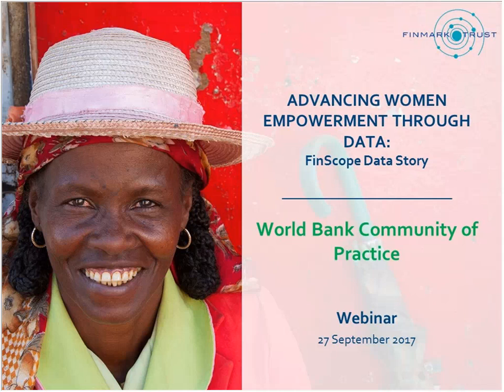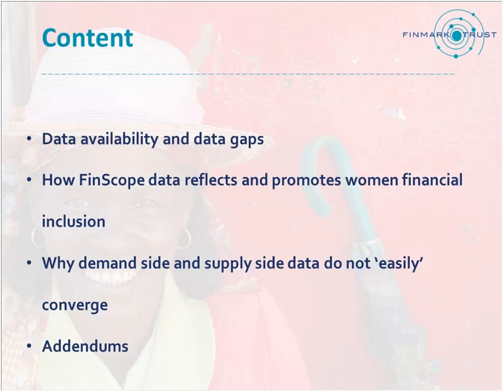Abel Motsomi: My name is Abel Motsomi. I am a research and information specialist at Finmark Trust. We collect data from FinScope surveys. From my presentation, just a quick snapshot: I want to talk a lot about data availability. There's Findex, there's FII, there's FinScope. The big question I would like to start pushing on is: we have the data, then what? Because that's the starting point of really creating a momentum and impact.